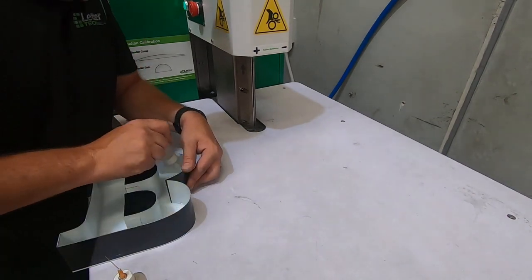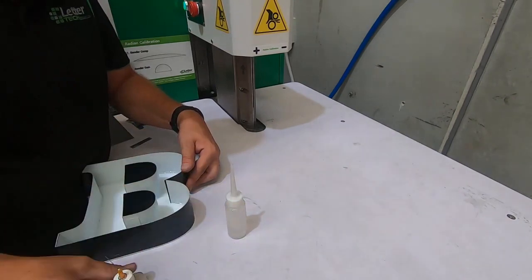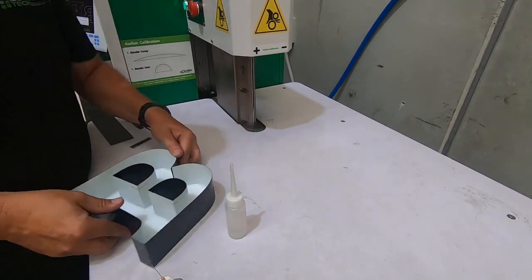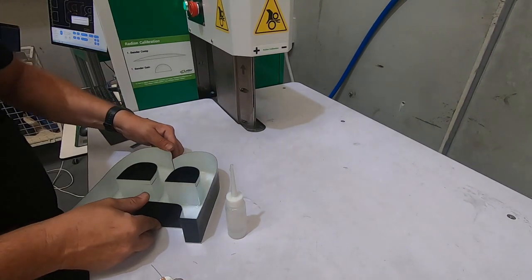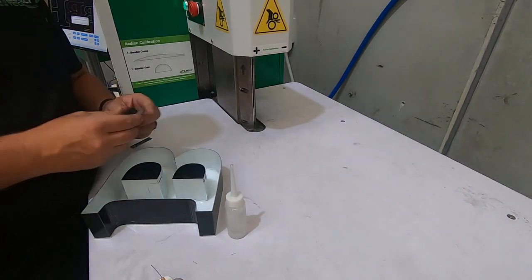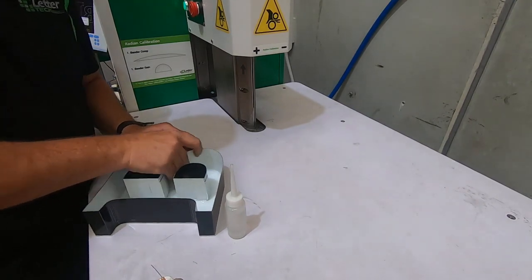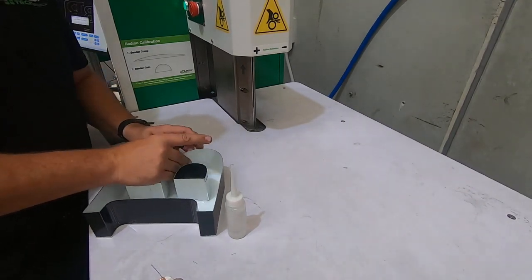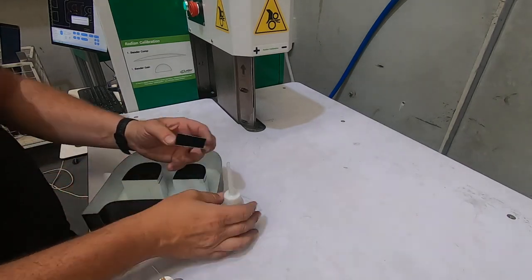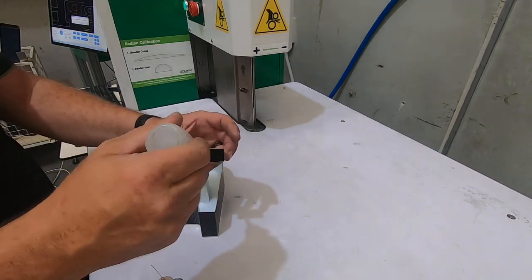And another advantage over these letters is you don't get rubbish building up in the bottom of the letters when they're on the wall. Acrylic letters you really need to take them down every couple of years and clean them because they get a buildup of dust and grime in the bottom of the letters, whereas these things you put them up and forget about them.